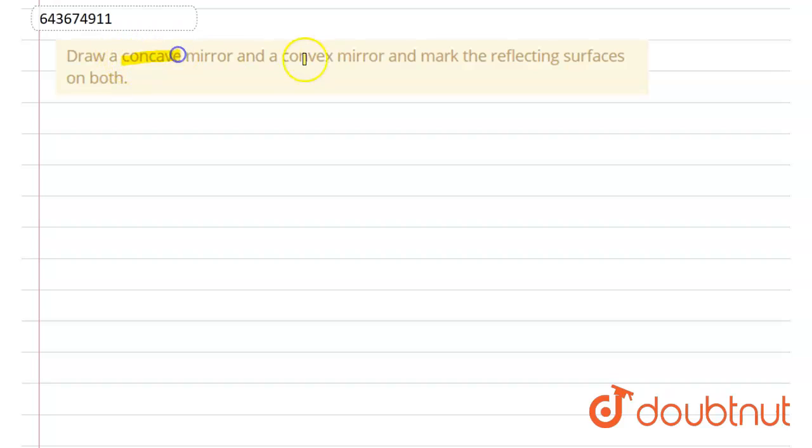So we know these two are spherical mirrors. For a concave mirror, if you draw a concave mirror, it will be shaded from the area or from the side which is bulging out.